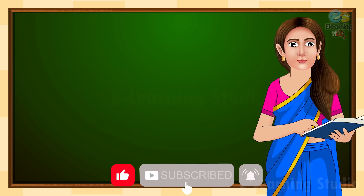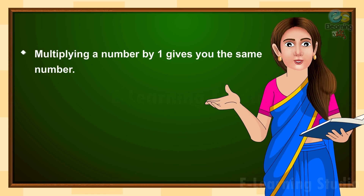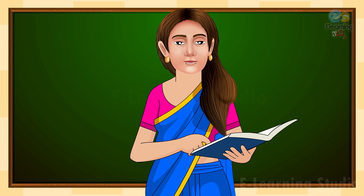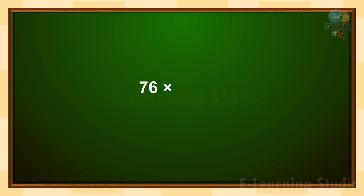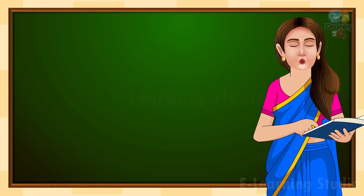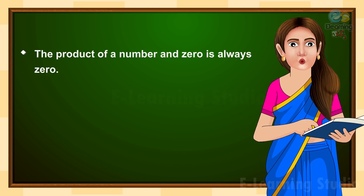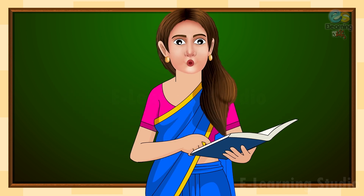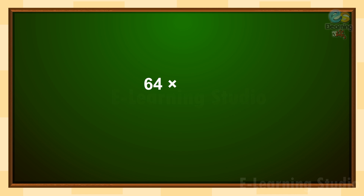Next is identity property. It tells us that multiplying a number by 1 gives you the same number. Let us understand identity property with the help of some examples. Next, it tells us that the product of a number and 0 is always 0. For example, 64 multiply 0 is equal to 0, and 294 multiply 0 is equal to 0.